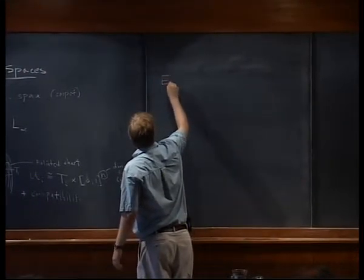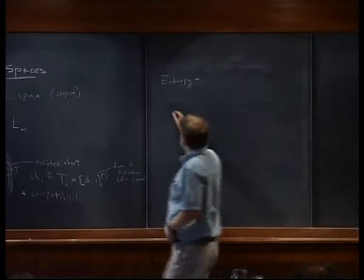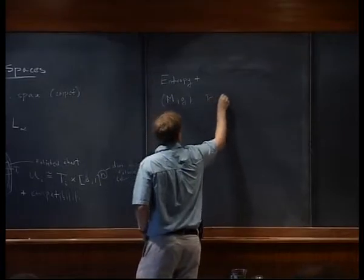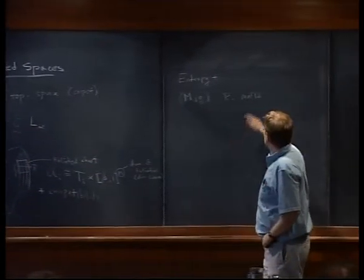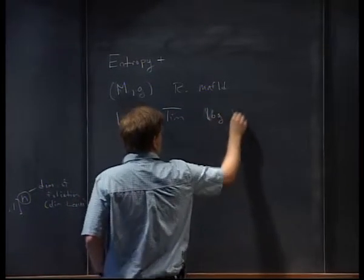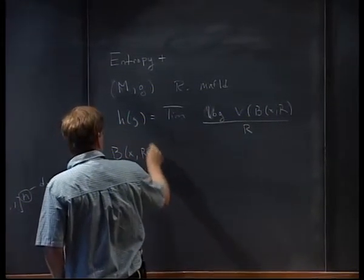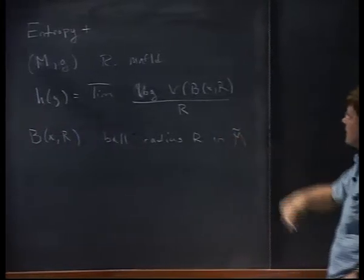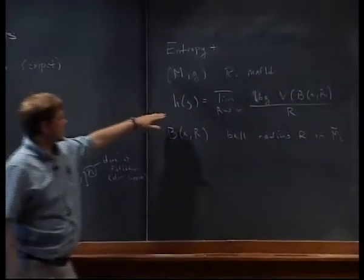Of course we have entropy, but I'm going to generalize this a little bit — I'll call it entropy-plus, to indicate we're taking a different supremum than normal. Normally the entropy of a Riemannian manifold (M, g) is defined as the limsup of log of the volume of a ball of radius R in the universal cover M-tilde, divided by R, as R goes to infinity. This is the volume growth entropy.